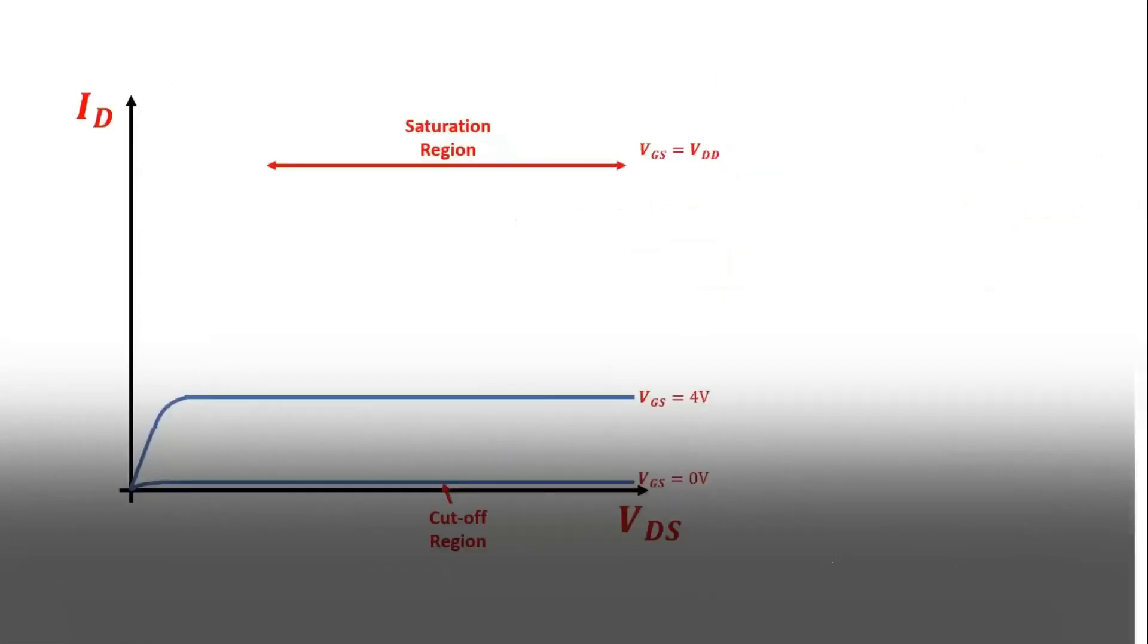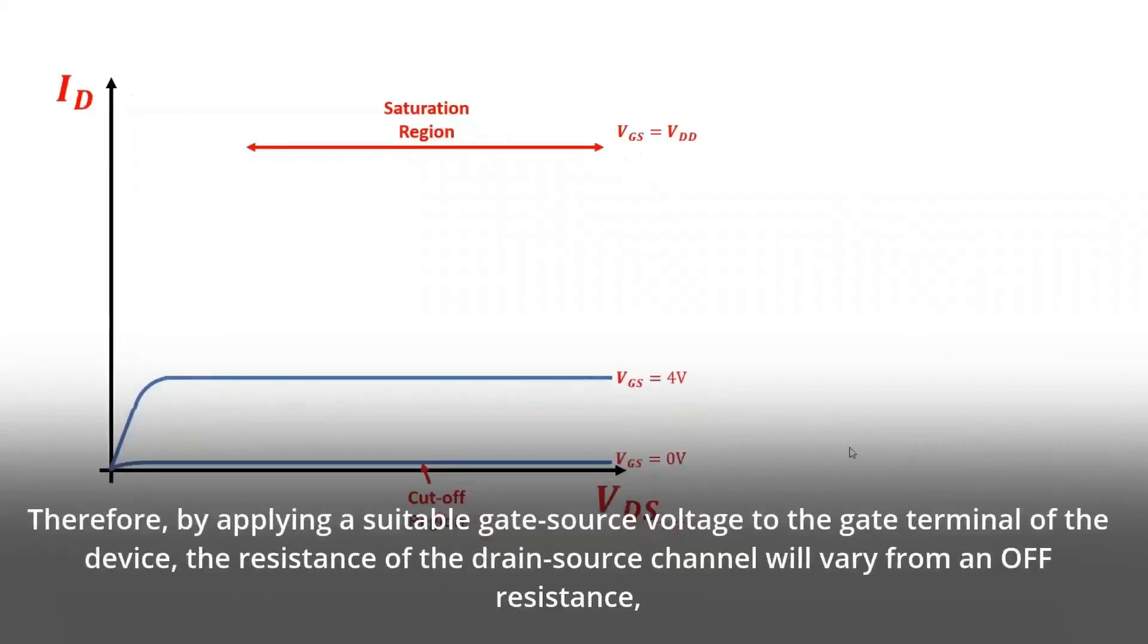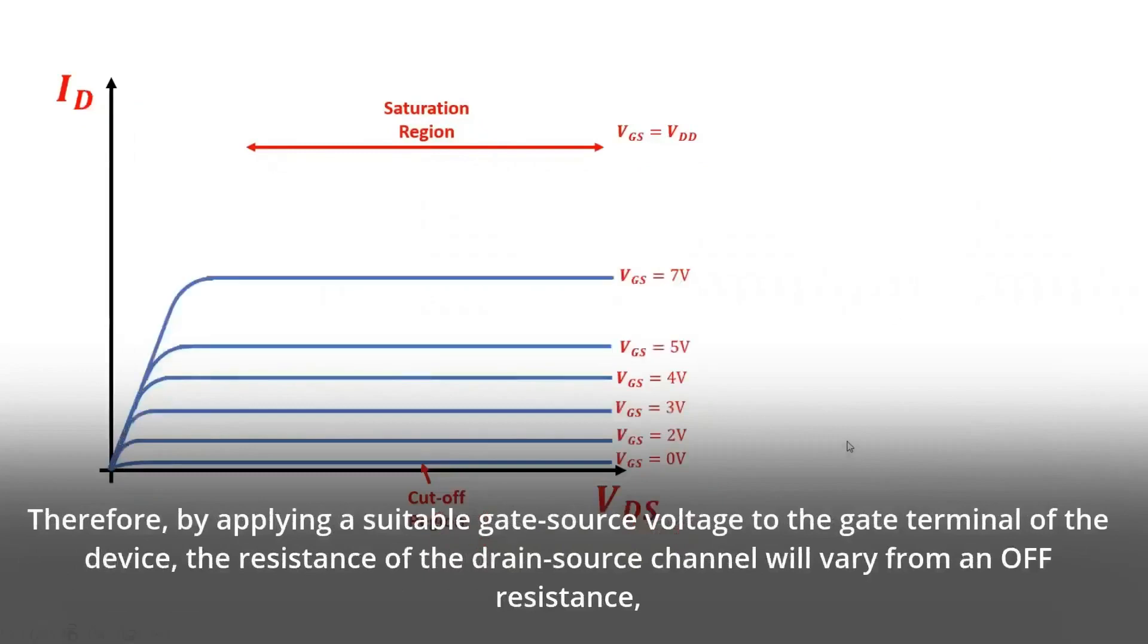Furthermore, the saturation region occurs when the gate source voltage exceeds the threshold voltage which allows maximum drain current to flow through the device. Therefore, by applying a suitable gate source voltage to the gate terminal of the device, the resistance of the drain source channel will vary from an off resistance, which is effectively an open circuit, to an on resistance.